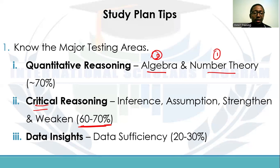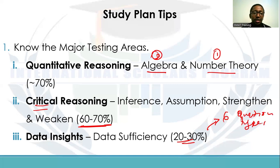For Data Insights, data sufficiency covers about 20 to 30 percent of the section. While that may seem like a small percentage, remember that Data Insights has about six question types — including data sufficiency, two-part analysis, multi-source reasoning, table analysis, and graphical interpretation. So having 20 to 30 percent in one question type is actually a large portion, as data sufficiency consistently covers the majority of Data Insights.